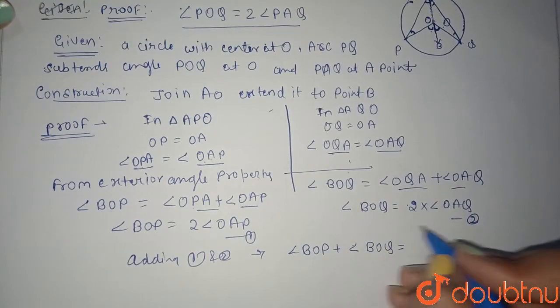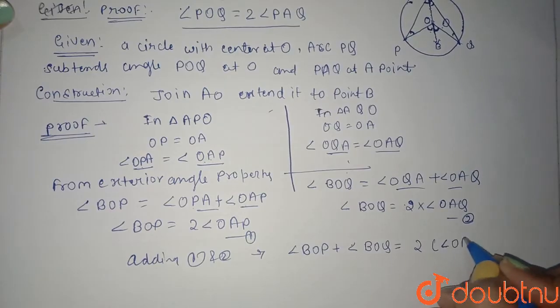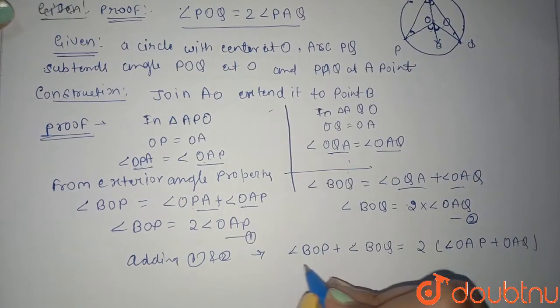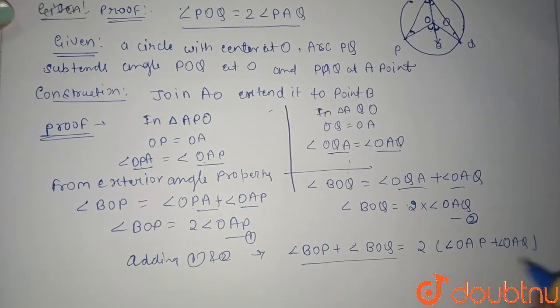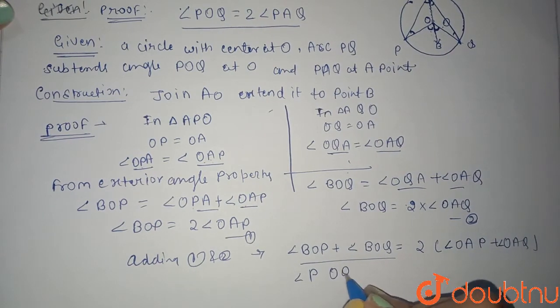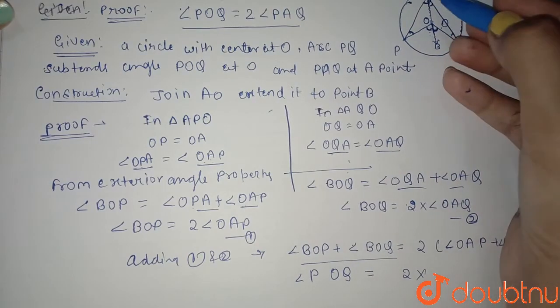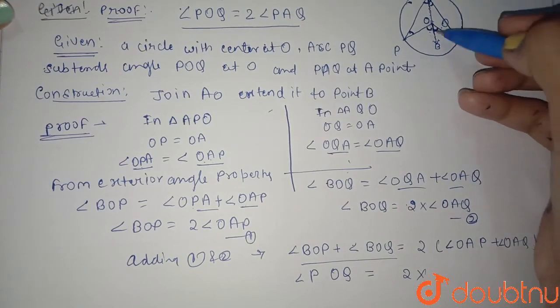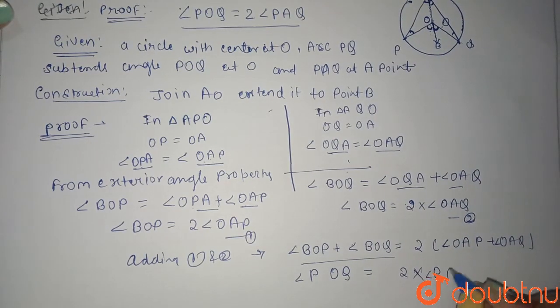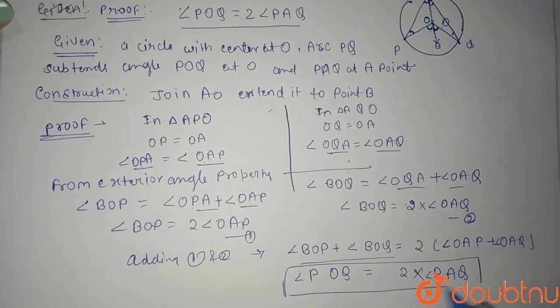What I'll get: angle BOP plus angle BOQ equals 2(angle OAP plus angle OAQ). This whole angle is angle POQ equals 2 times the whole angle PAQ. And hence it's proved. This is what we wanted to be proved. Hence proved.